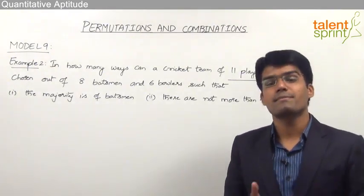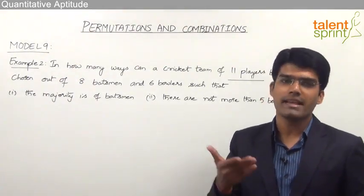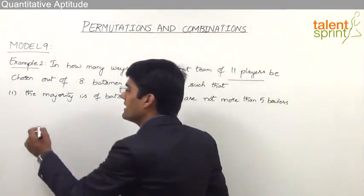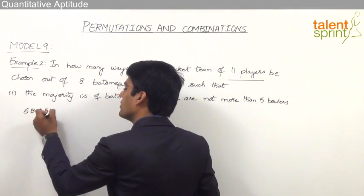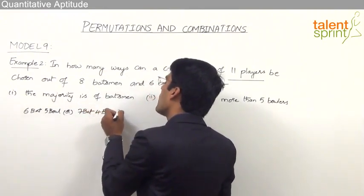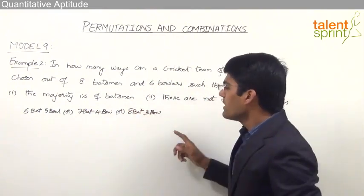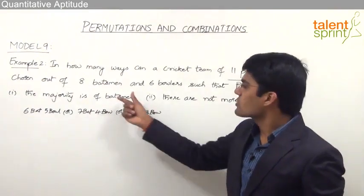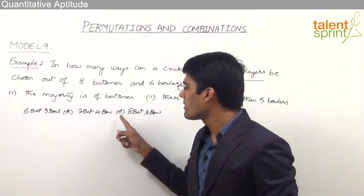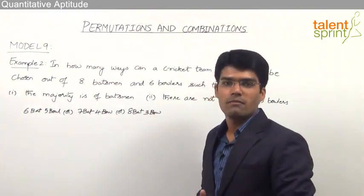Likewise, there can be more than 6 batsmen: 7 batsmen and 4 bowlers still gives majority to batsmen; 8 batsmen and 3 bowlers — again majority is batsmen. We need to consider all cases where majority is batsmen. So there can be 6 batsmen and 5 bowlers, or 7 batsmen and 4 bowlers, or 8 batsmen and 3 bowlers. We cannot go beyond 8 batsmen since that is the total available. Since 'or' means addition, we add the number of ways for each case.